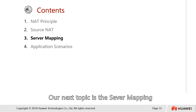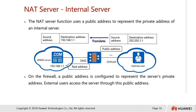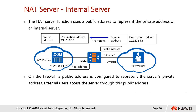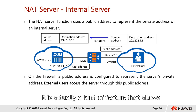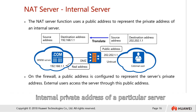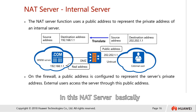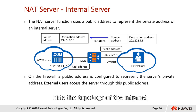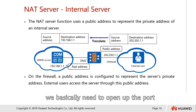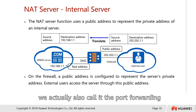Our next topic is server mapping. In server mapping, let's talk about the NAT server, which is a feature that allows a public address to access the internal private address of a particular server. NAT will actually hide the topology of the intranet internal network. On the firewall, we basically need to open up the port — in this case, we also call it port forwarding.